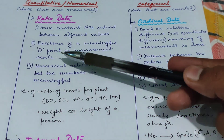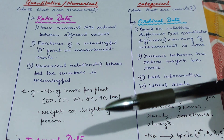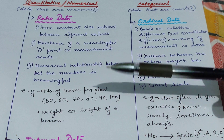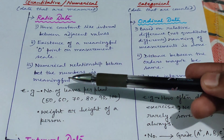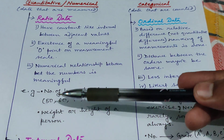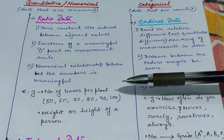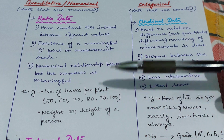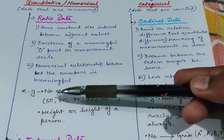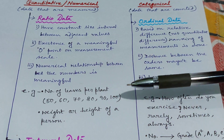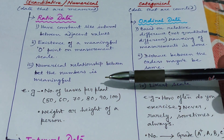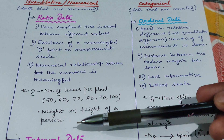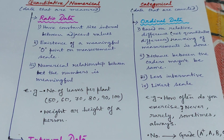There is also a meaningful zero point: if there are zero leaves, that means there is no leaf — that is a meaningful zero. And the numerical relationship is also meaningful: if one plant has 50 leaves and another has 100, then the second plant has twice as many. So 50 is half of 100. Other examples include weight or height of a person. These are ratio data.